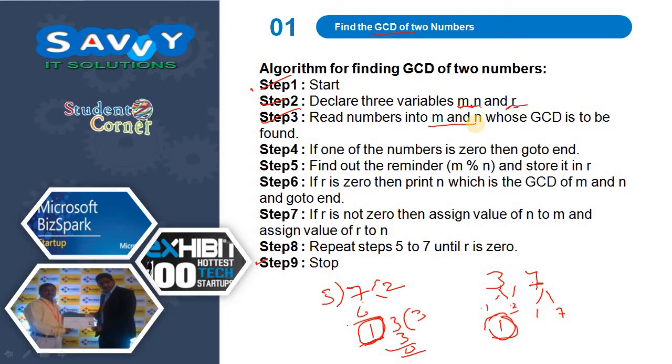After that, if one of the numbers is 0, then go to end. If any number is 0, then obviously it goes to end. Otherwise, find out the remainder M mod N and store it in R. If R is 0, then print N which is the GCD of M and N and go to end. If R is not 0, then assign value of N to M and assign value of R to N. Repeat steps 5 and 6 until R is 0.